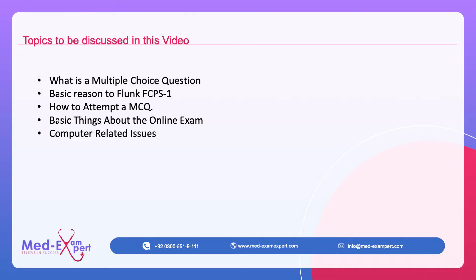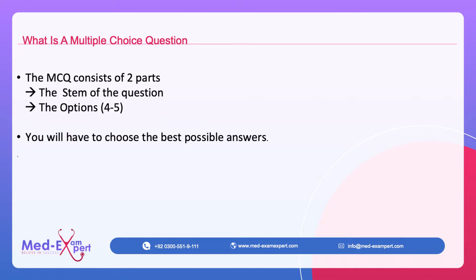In MCQs, there are basically two parts. One is the STEM and the other is the options. The STEM can be long or short, but in FCPS you don't need to worry because mostly the STEM is small, so time management is not a problem. There are 4 to 5 options from which you choose the best possible answer.